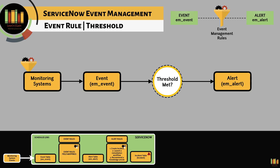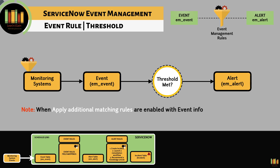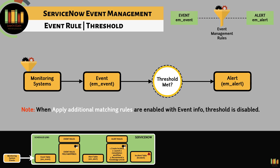Event rules also offer the same capability, based on a metric value or the number of occurrences of the event over a specific period. Note: when apply additional matching rules are enabled with event info, threshold is disabled.